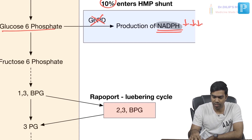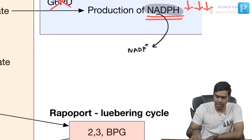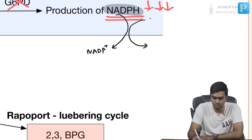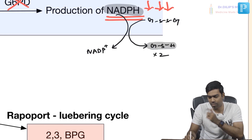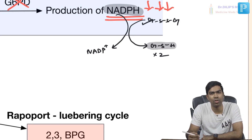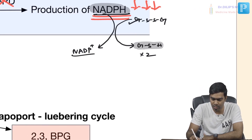NADPH is important because its conversion to NADP is essential to restore reduced glutathione stores. Initially glutathione exists in an oxidized form, and to convert it to reduced glutathione and maintain those stores, the NADPH-to-NADP conversion is extremely important.